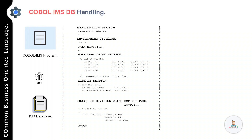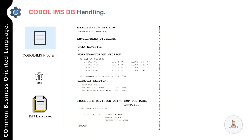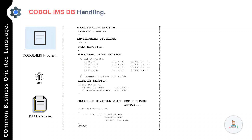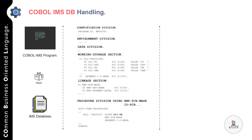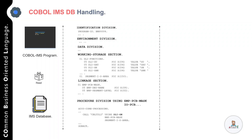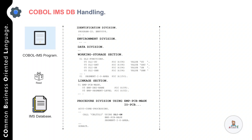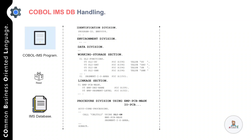DLI acts as an interface between an application program and the access method. To perform an operation on a DLI database, a program does not issue standard COBOL file I/O statements such as READ, WRITE, OPEN, or CLOSE — instead it executes a CALL statement to invoke DLI. The parameters passed by the CALL statement tell DLI what operations are to be performed, and then DLI invokes the access method. In the working storage section we have defined the DLI functions.